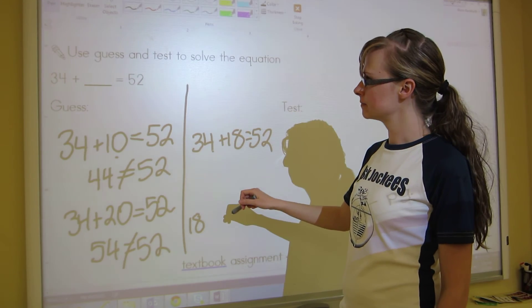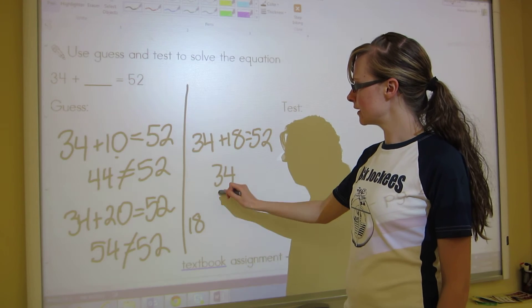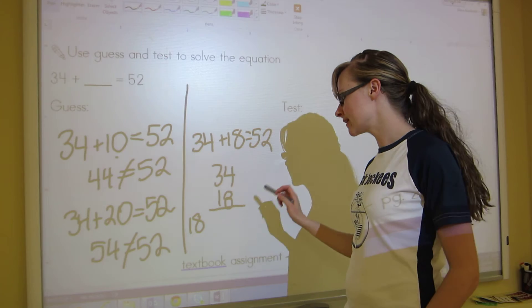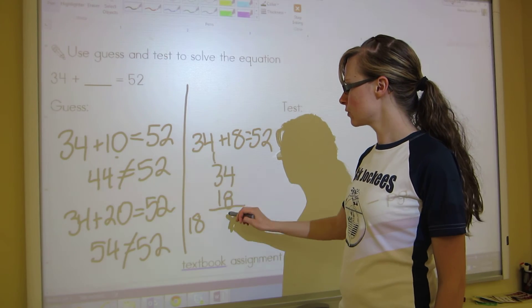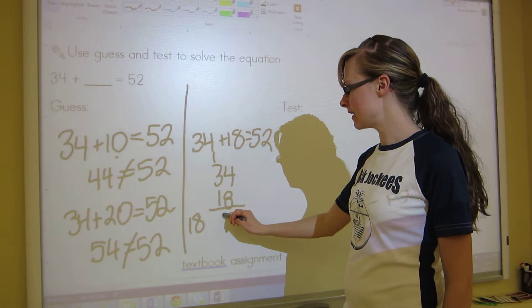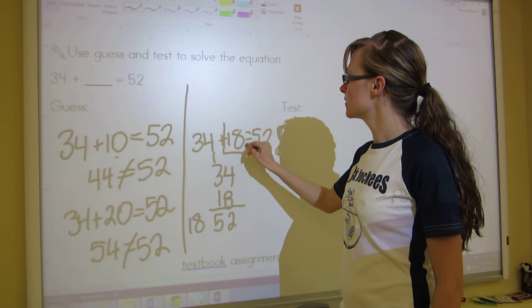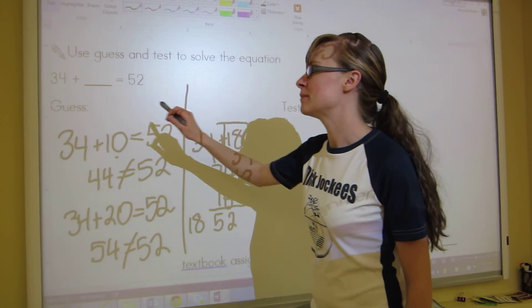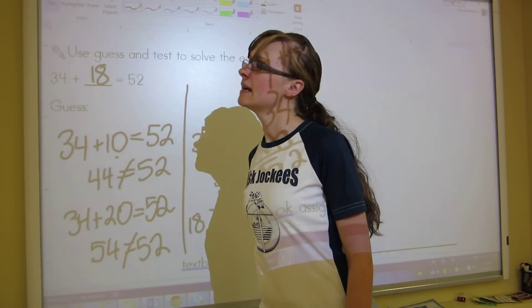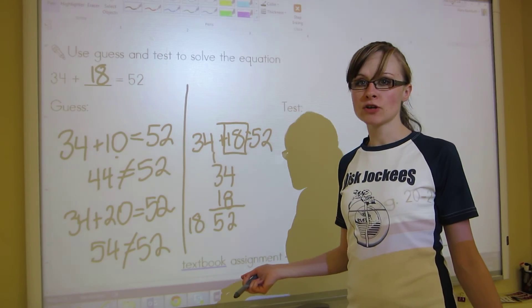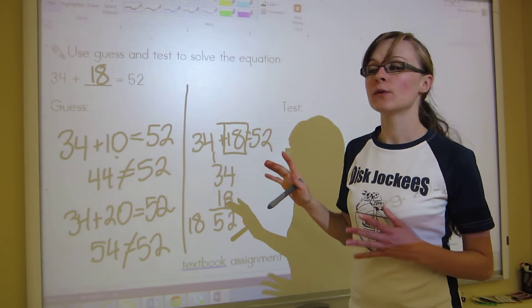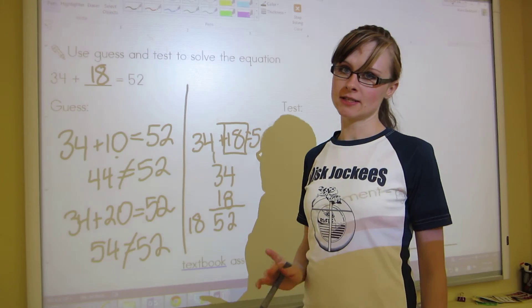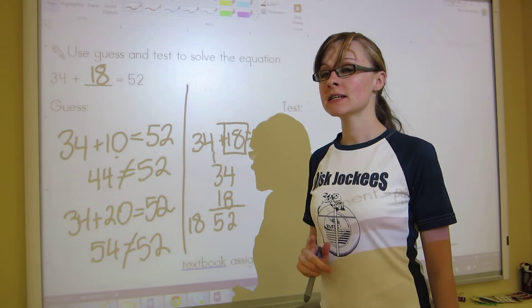Let's try it. We've got 34 plus 18 equals 52. Maybe I have to write one on top of the other because it gets tricky when it gets into numbers like this. 8 plus 4 is 12, carry the 1, 3, 4, 5. 52. So that means that my answer is 18 in that blank. I used guess and test to try it out. Now some of you are going to get frustrated with this one because you like to just know the answer instantly.